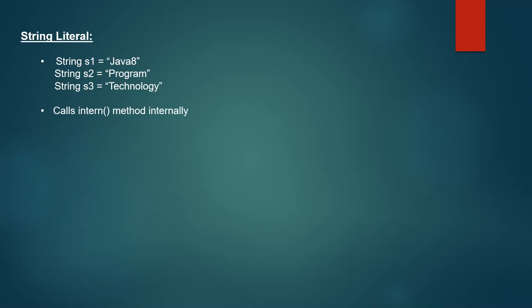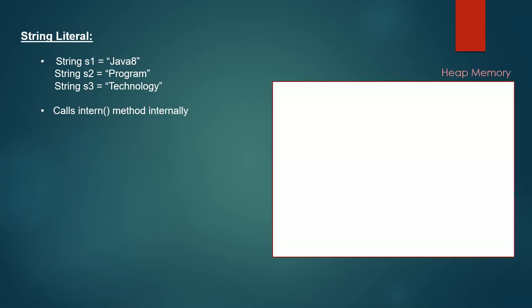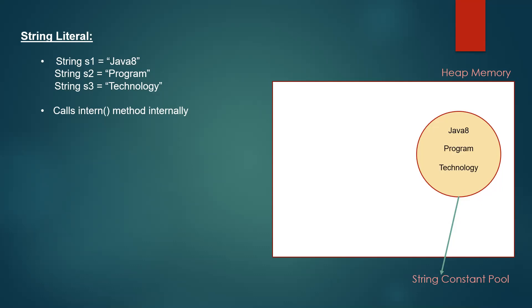With this, a method called intern gets called internally. When we create an object, some space is occupied in the heap memory. There is something called the string constant pool, for which some space is reserved within the heap memory. Whenever we create a string literal like String S1 equal to "Java 8", it will be put into the string constant pool if it is not already present. If the literal is not present in the string constant pool, it gets added there. When we declare another literal that is already present in the pool, that string's reference is returned to the literal.